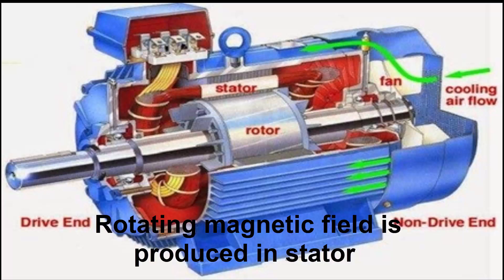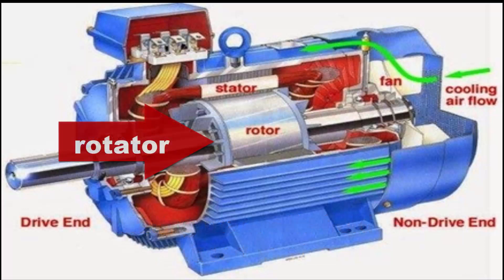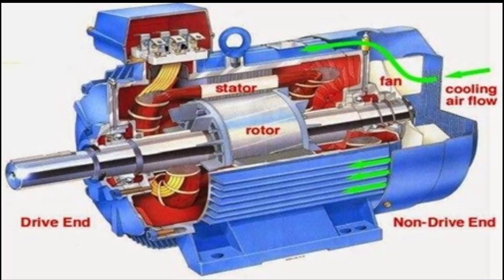When the motor is powered up with three-phase AC supply, a rotating magnetic field is produced within the stator circuit, which induces the EMF in the rotor. Because the rotor is short-circuited through the end ring, current is produced due to the induced EMF. This current interacts with the rotating magnetic field, then torque is developed in the rotor in the direction of the rotating magnetic field. This is the main basic working principle of every induction motor.